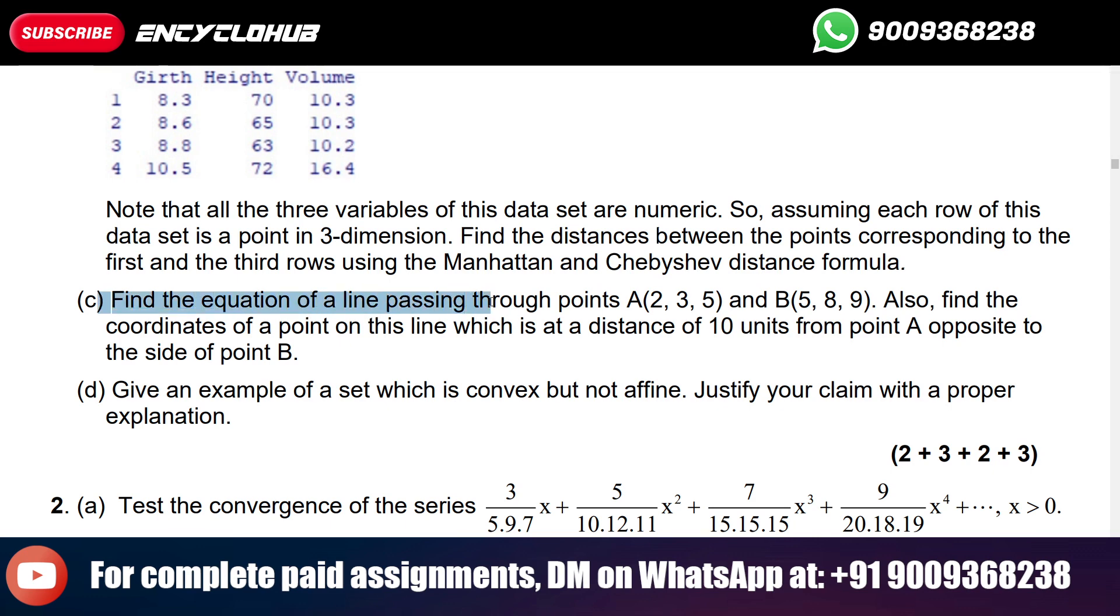Find the equation of a line passing through points A (2, 3, 5) and B (5, 8, 9). Also find the coordinates of a point on this line which is at a distance of 10 units from point A opposite to the side of point B.